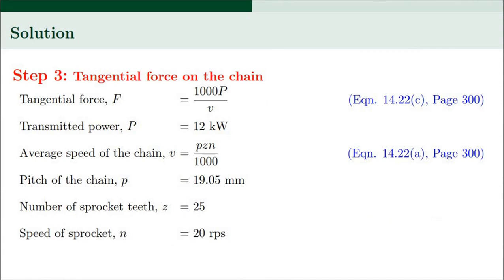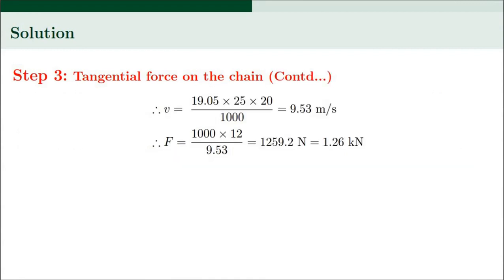In Step 3 we determine the tangential force on the chain. The tangential force F = 1000P / V (equation 14.22C, page 300), where transmitted power P is 12 kW. The average chain speed V is given by equation 14.22A: V = P·Z·N / 1000, with pitch P = 19.05 mm, Z = 25 teeth, and N = 20 RPS, giving V = 9.53 m/s. Substituting, the tangential force F = 1259.2 N, taken as 1.26 kN.